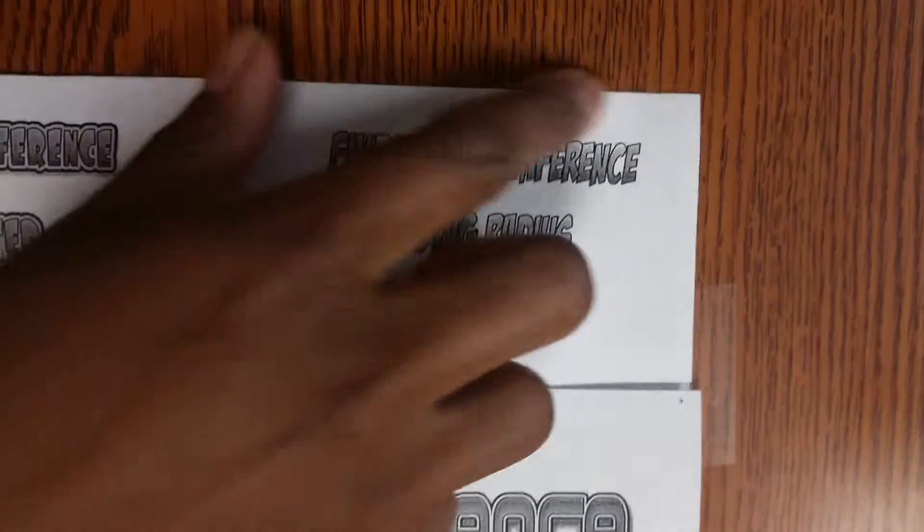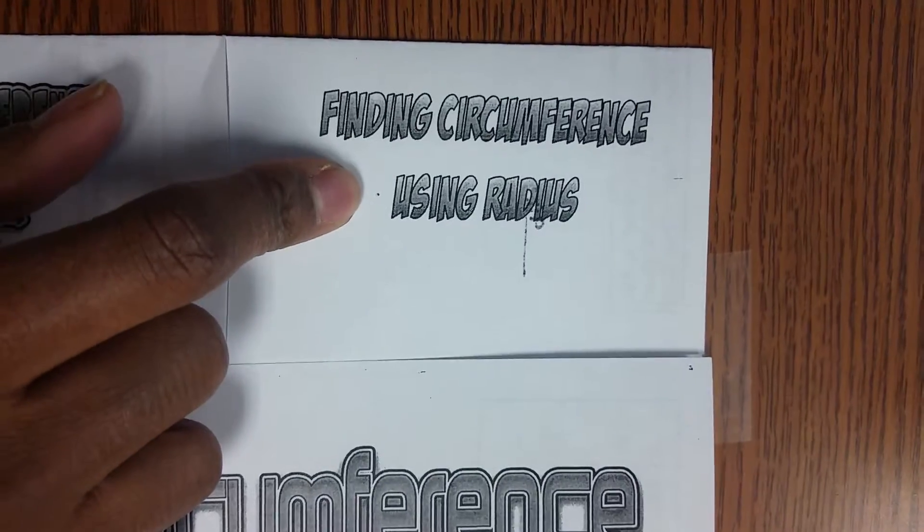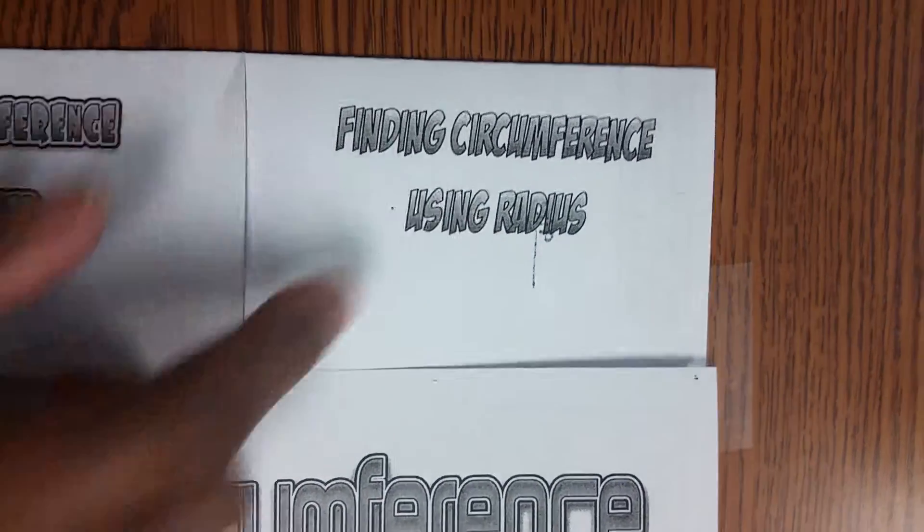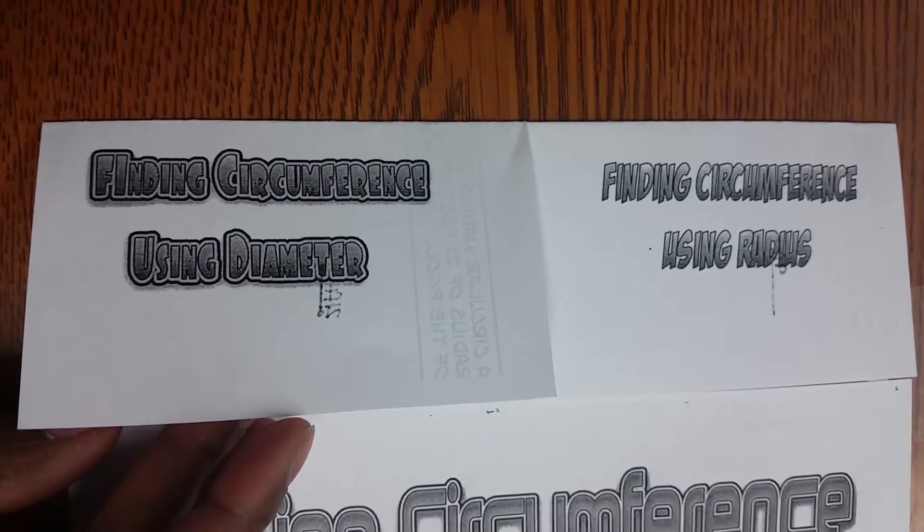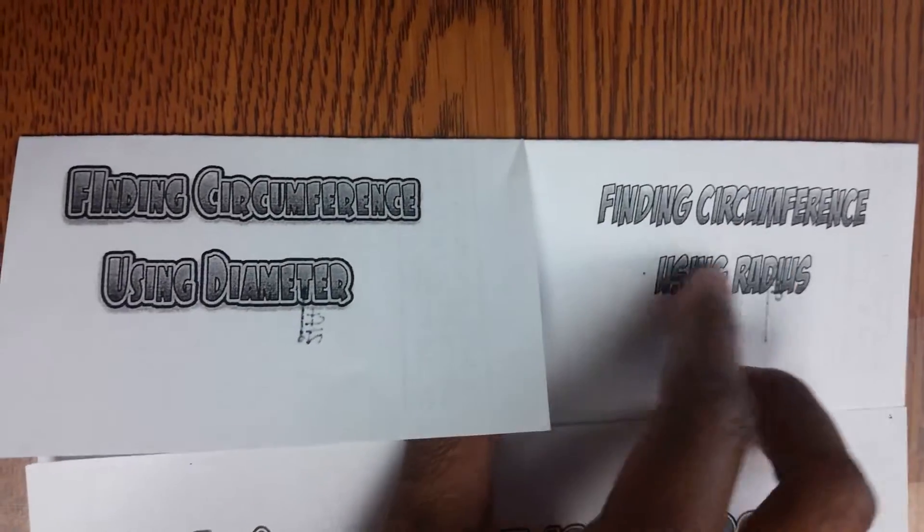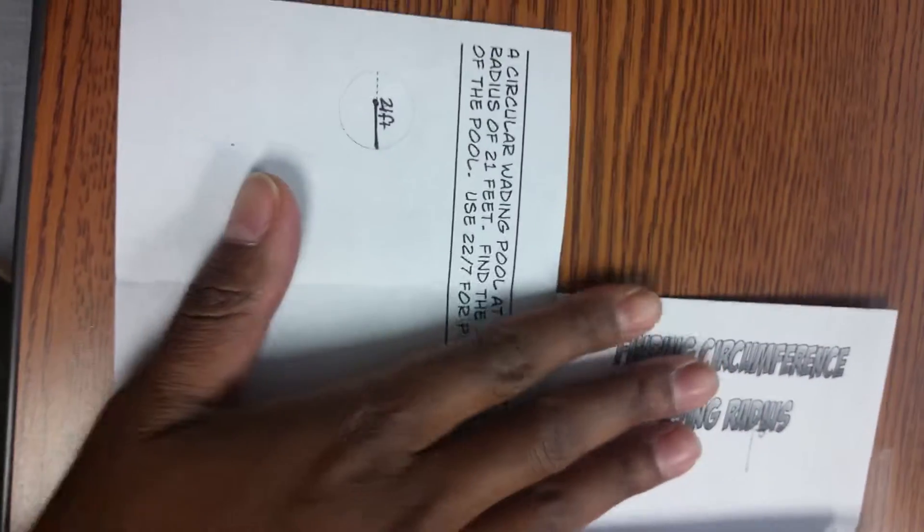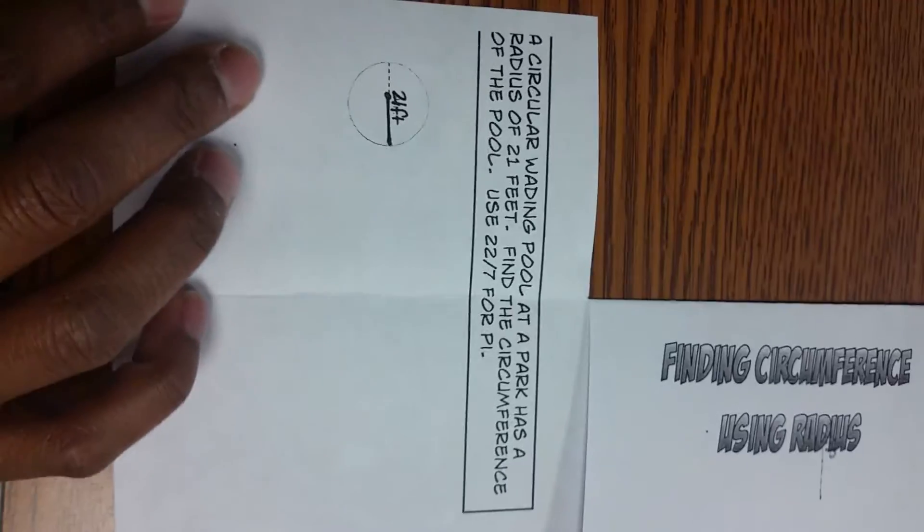So on our foldable here, I did make a mistake where it says finding circumference using the radius. I actually accidentally put that picture under finding circumference using the diameter. So we're going to first do finding circumference using the radius, but under the flap, the actual question is under the flap of the diameter. So let's look at that question.